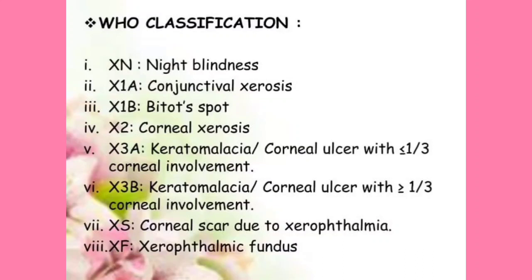They generally give a picture of Bitot's spot and ask for its classification, so X1B — remember, not X1A. X1A is conjunctival xerosis. Bitot's spot occurs on the conjunctiva. So X1A is conjunctival xerosis, X1B is Bitot's spot. XN: N means night blindness.